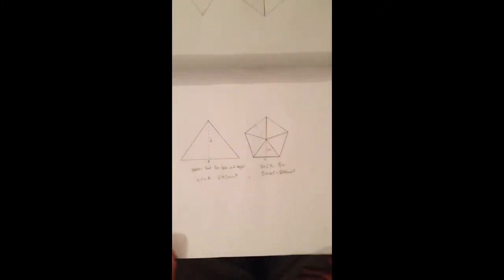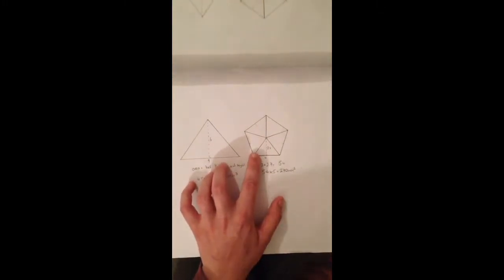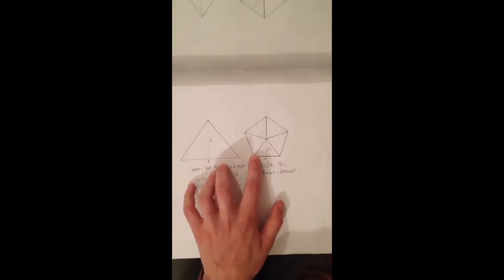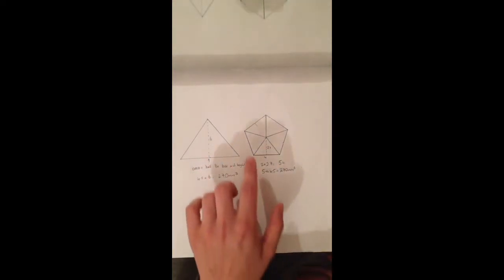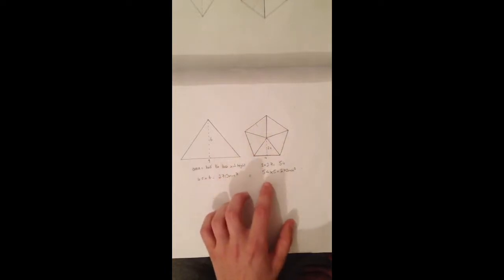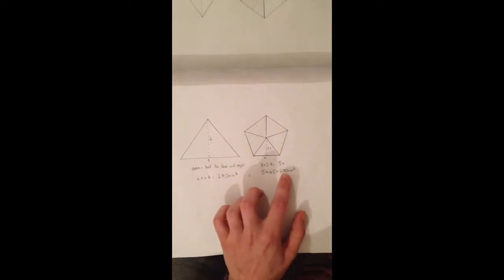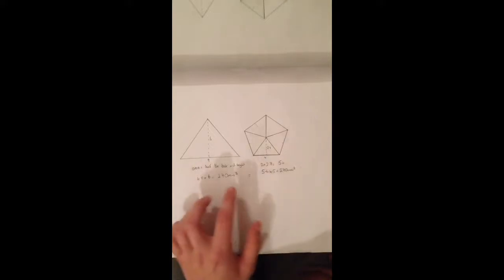Now to make sure that is the same area as this pentagon I divided the pentagon into 5 and I took all the areas of the 5 individual triangles and when I did that I found the area of the pentagon to be 270 millimeters cubed also so it worked out quite well.